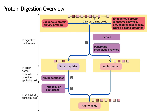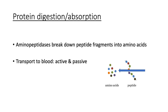Digestion of protein occurs within the digestive tract lumen using pepsin and pancreatic proteolytic enzymes. After that digestion, we can be left with some single amino acids, but in some cases we'll have small peptides that need further digestion. We continue this digestion within the brush border of the intestinal epithelial cells using aminopeptidases, which break down those peptide fragments into individual amino acids.